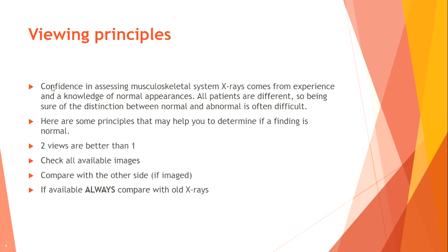Viewing principles. Confidence in assessing musculoskeletal x-rays comes from experience and knowledge of normal appearances. All patients are different, so distinguishing normal from abnormal is often difficult. Key principles: two views are better than one; check all available images; compare with the other side if imaged; and always compare with old x-rays if available.